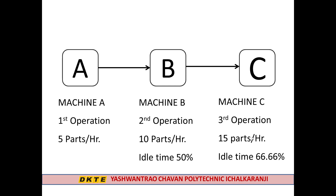For example, there are three machines: machine A, machine B, and machine C. The total operations involve machine A, machine B, and machine C working in sequence.